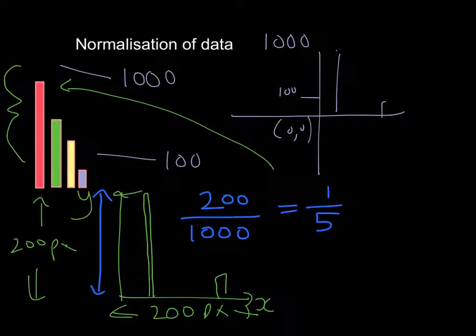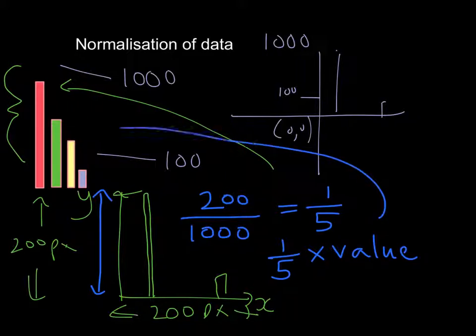So, that will make sense. Now, this will mean that if I have a data value of 100, then this should be equivalent to 200 pixels in length. Therefore, the only thing I now need to do is to use my normalisation factor and then multiply it by the value, which is from this data set here.